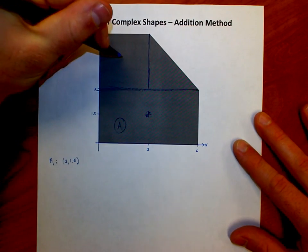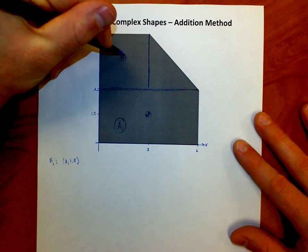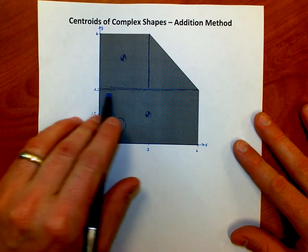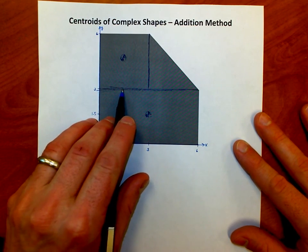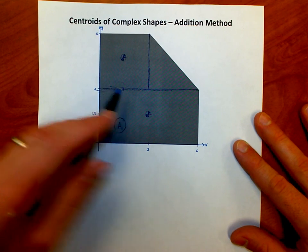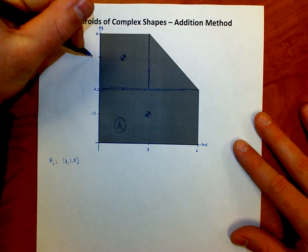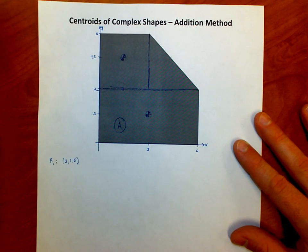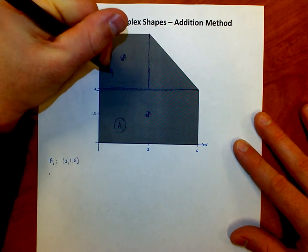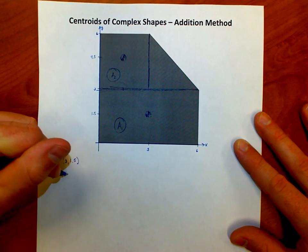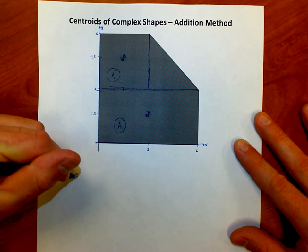Let's do the same thing up here. The square, very easy. The square, it's right in the center. The square is three units wide, so it'd be 1.5 over from the left. And then it'd be an additional 1.5 up from this three line. So really it's a height of 4.5 overall. We'll call this area two. Area two, the centroid would be located at 1.5 and 4.5.